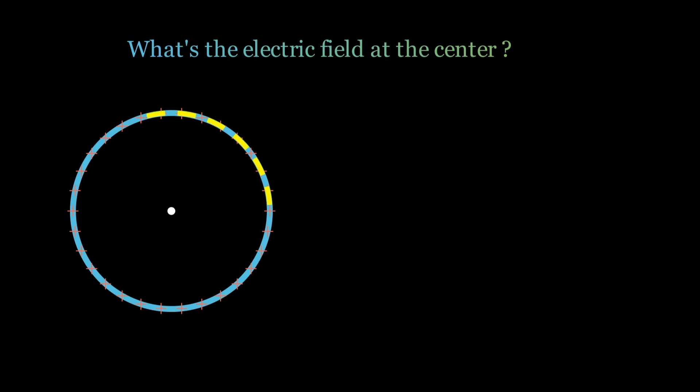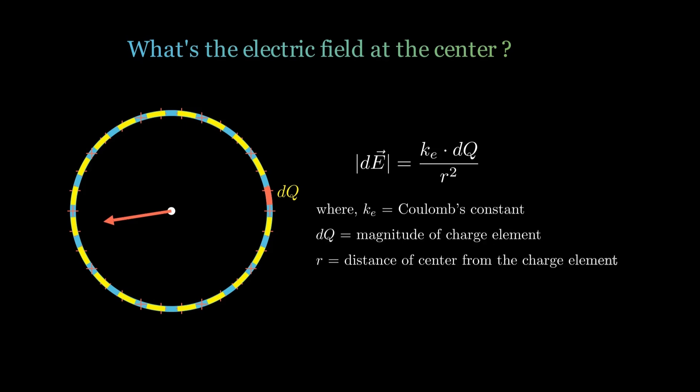Think of this ring as being made up of many infinitesimal charge elements dq. Each element creates a small electric field dE, which is directed radially outward along the line connecting dq and the center of the ring. According to Coulomb's law, the magnitude of this electric field is given by Ke times the magnitude of the charge element dq over r squared, where Ke is Coulomb's constant and r is the distance from the charge to the point where the field is being calculated. In this case, the center of the ring.